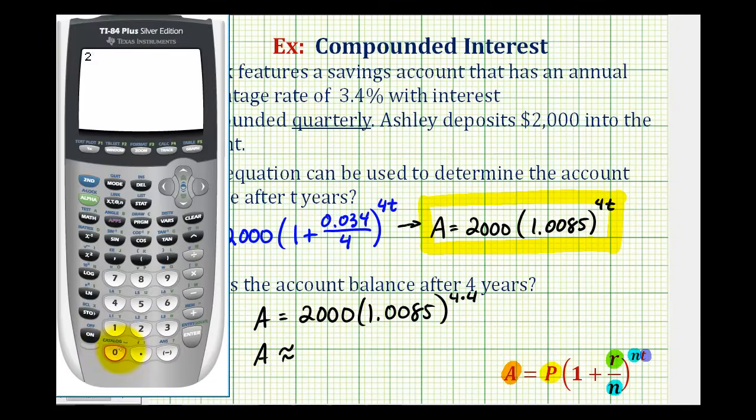So we'll have 2,000 times 1.0085 raised to the power of 16. So the account balance would be $2,290 and 5 cents.